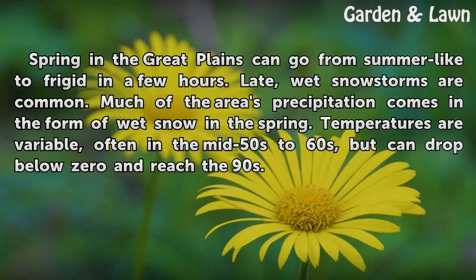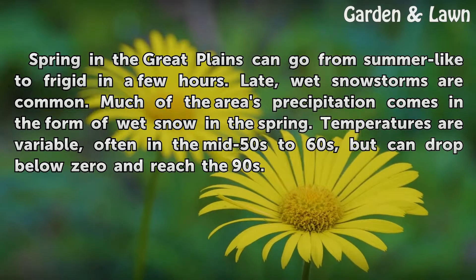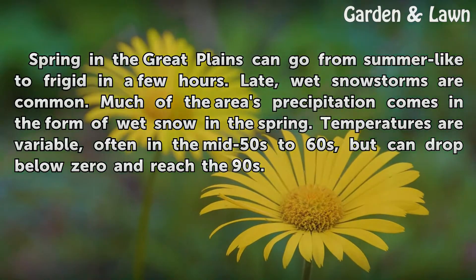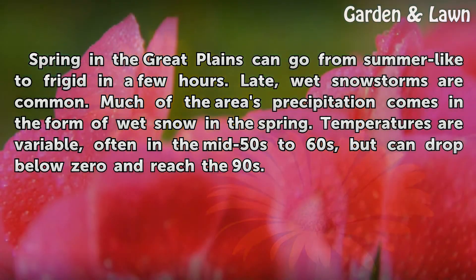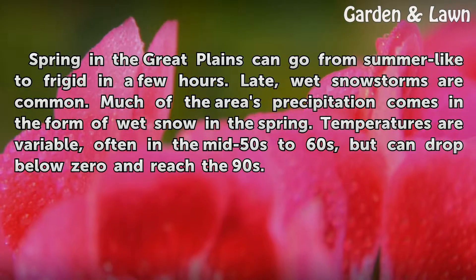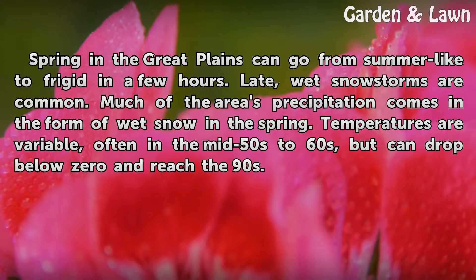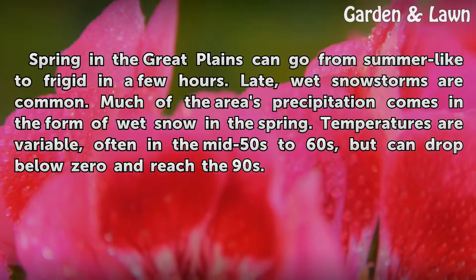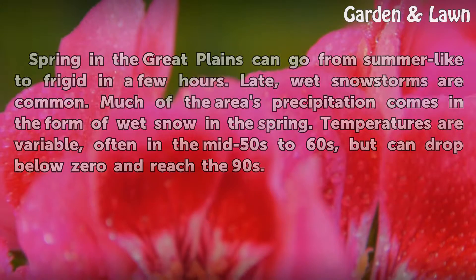Spring in the Great Plains can go from summer-like to frigid in a few hours. Late, wet snowstorms are common. Much of the area's precipitation comes in the form of wet snow in the spring. Temperatures are variable, often in the mid-50s to 60s, but can drop below zero and reach the 90s.